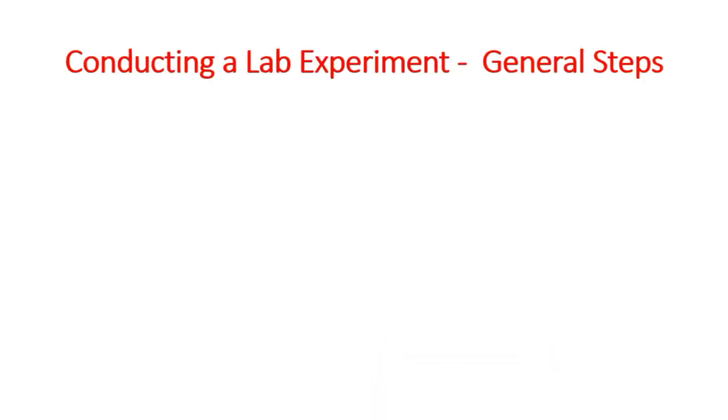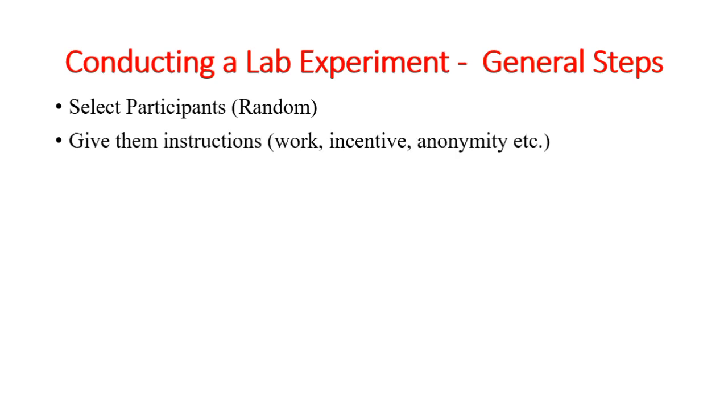Now, let's talk about conducting lab experiments. Main steps in conducting lab experiments are: number one, to select the participants randomly. One of the ways is to invite participants to be part of the experiment without telling them what it will be. Then, among interested, select your desired number of participants randomly. Then, give them instructions with elaborate work, incentives, anonymity, etc. Please, better to give instructions in written form and then give them time to ask questions and make them familiarize with instructions. Then, give them the task to perform.